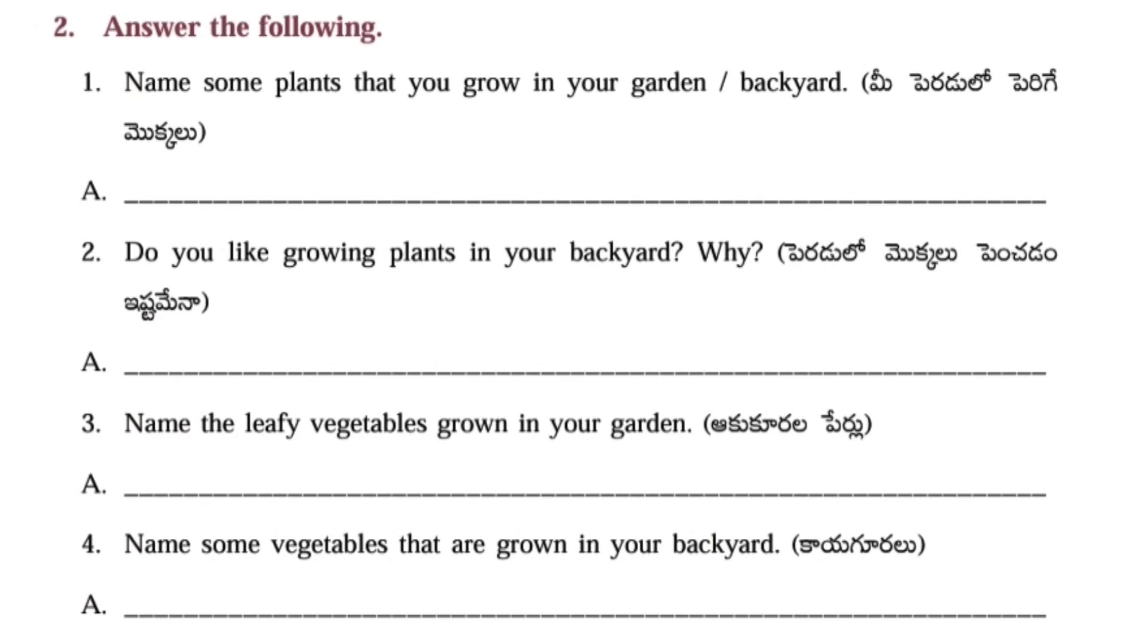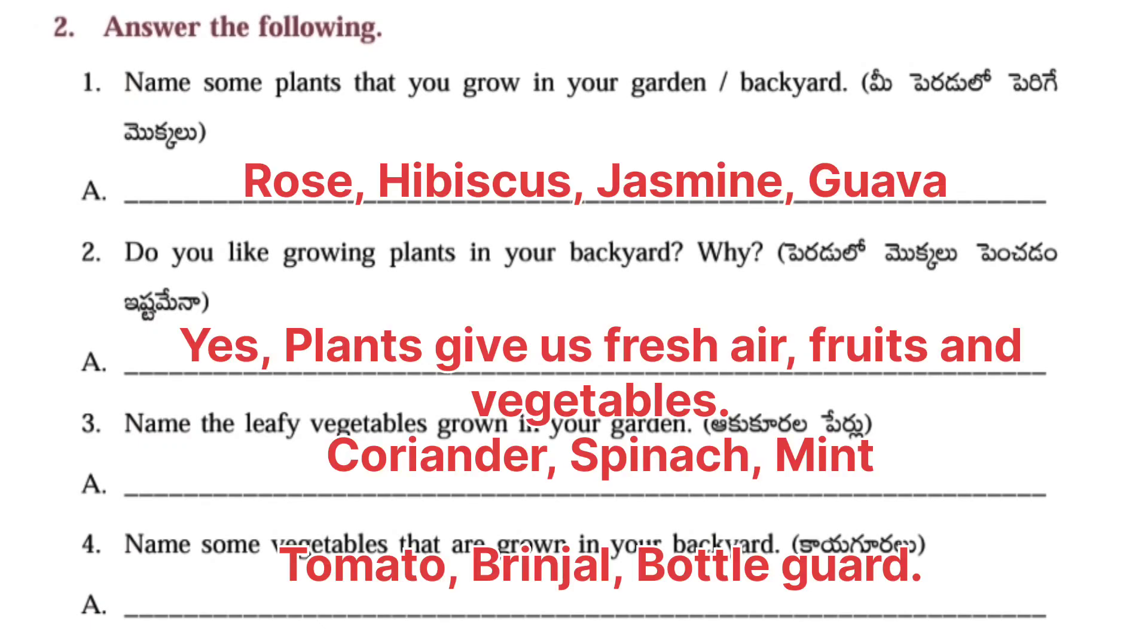Next: Answer the following questions. First one: Name some plants that you grow in your garden. Answer: Rose, Hibiscus, Jasmine, Goa. Second question: Do you like growing plants in your backyard? Why? Yes, plants give us fresh air, fruits and vegetables. Third question: Name the leafy vegetables grown in your garden. Answer: Coriander, spinach and mint are leafy vegetables. Next fourth question: Name some vegetables that are grown in your backyard? Answer: Tomato, brinjal, bottle garden.